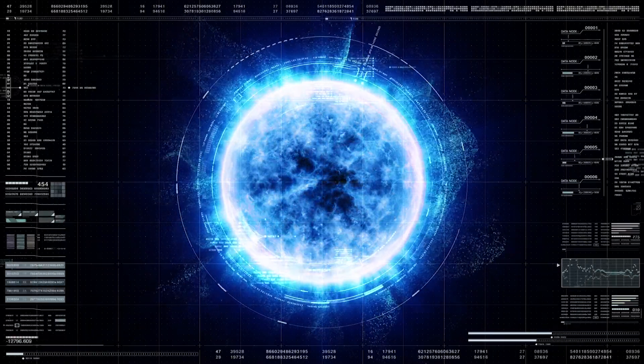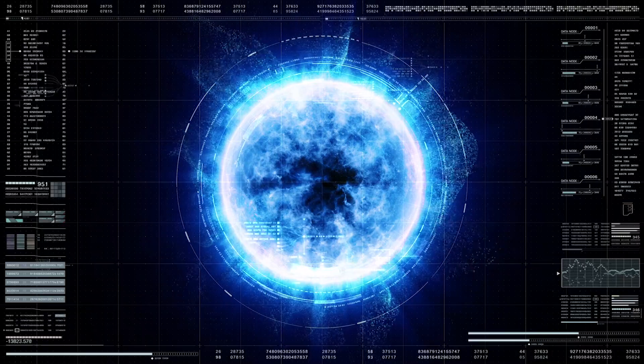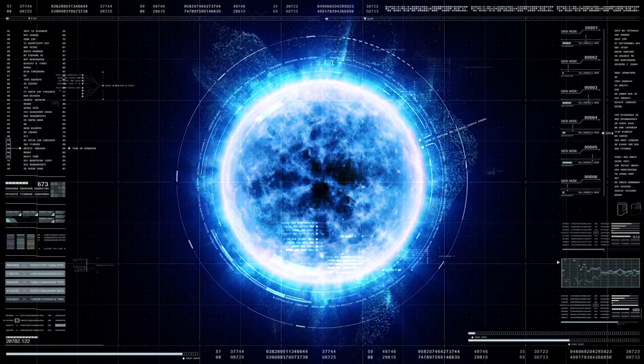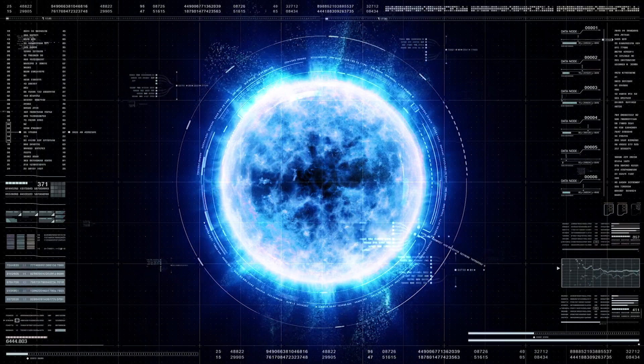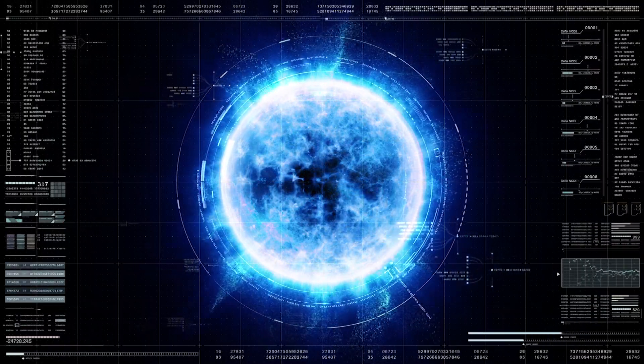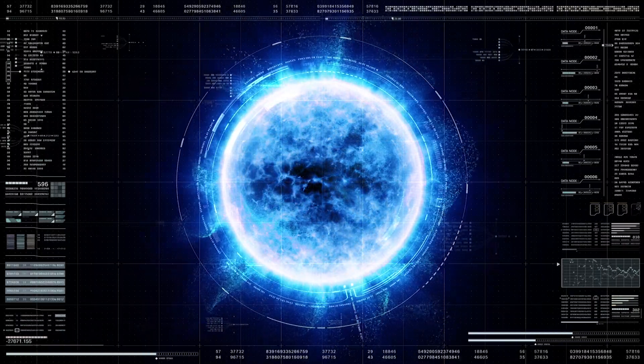When a white dwarf cools enough, the molten liquid at its core begins to solidify. This means the star begins turning to crystal. This is the first direct evidence that white dwarfs crystallize or transition from liquid to solid.